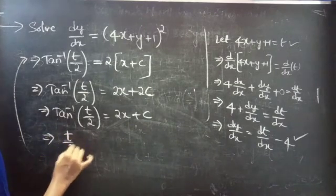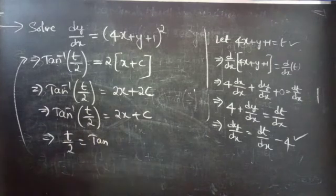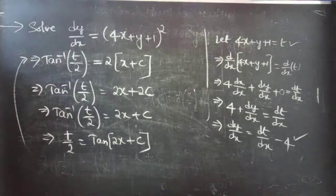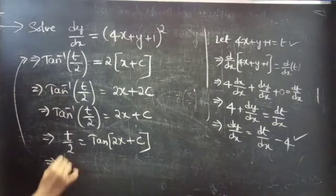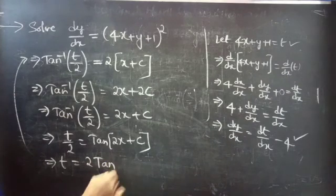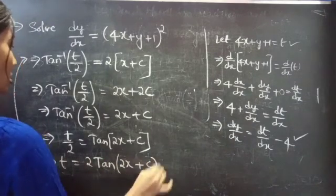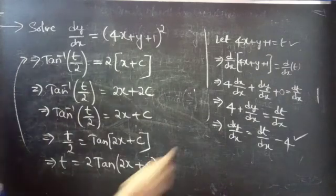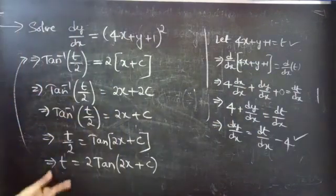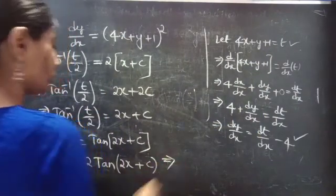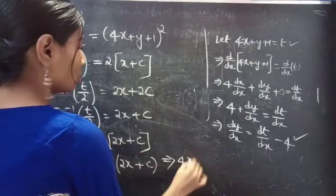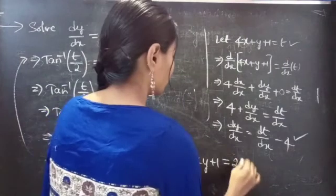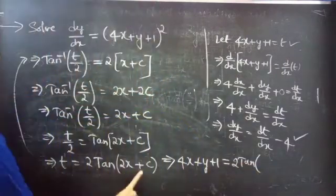Again, we can write this as t by 2 equals tan of 2x plus c. Then t equals 2 times tan of 2x plus c. We have t equals 4x plus y plus 1, so now we can replace t. We get 4x plus y plus 1 equals 2 tan of 2x plus c.